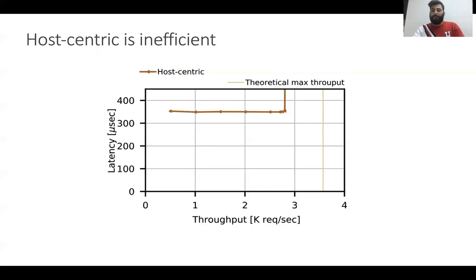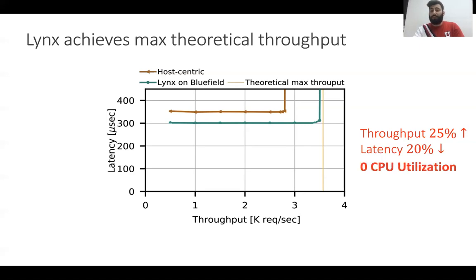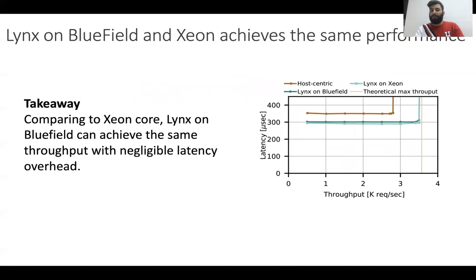Here you can see the throughput-latency graph. The vertical line on the right is the theoretical maximum throughput that LeNet can achieve. You can see the performance of the host-centric architecture on this graph. When using Links on Bluefield, we get 25% better throughput and 20% lower latency compared to the host-centric architecture, and we almost achieve the maximum theoretical throughput — all with zero CPU utilization since the CPU is not used. Compared to a Xeon Core, Links on Bluefield can achieve the same throughput with negligible latency overhead.